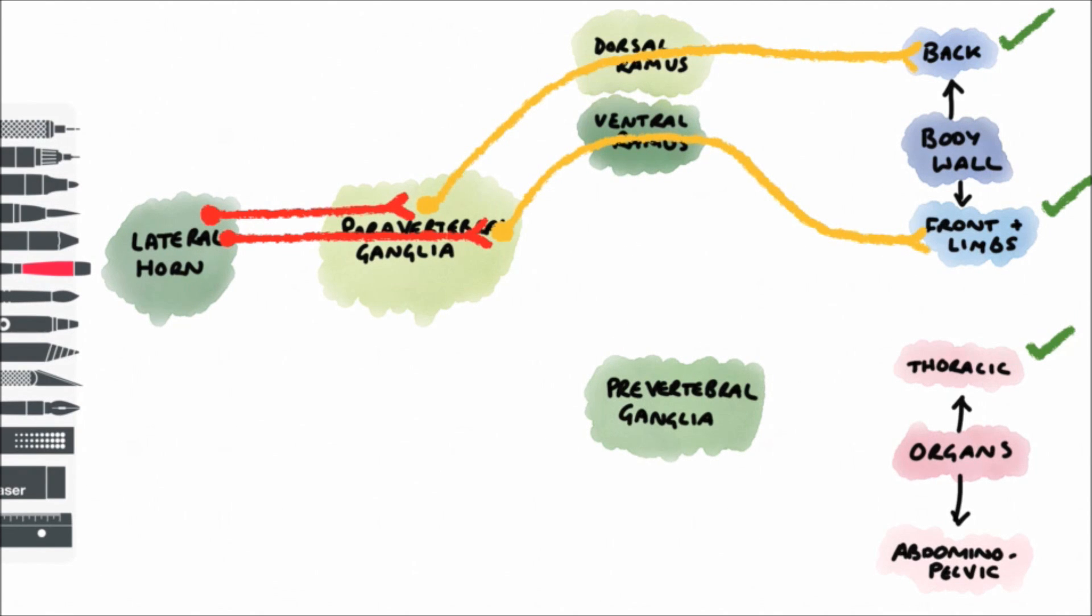The nerves supplying the thoracic organs, so the heart and the lungs, they will originate in the lateral horn also. They also synapse in the paravertebral ganglia, and then their postganglionic fibers pass straight across to the cardiothoracic organs.